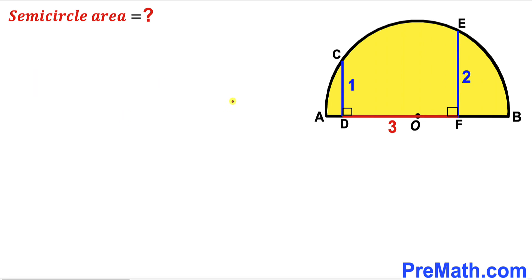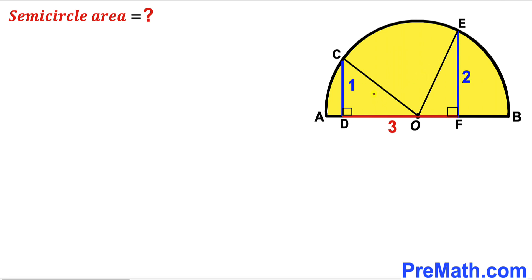Let's get started. Before we can calculate the area of this semicircle, we must find the value of its radius r. We are going to connect center O with point C, and likewise connect center O with point E. OC is the radius of this semicircle, labeled r, and OE is the radius as well, also labeled r.